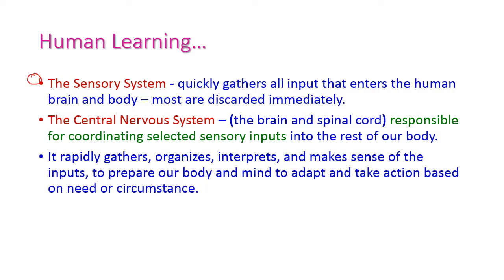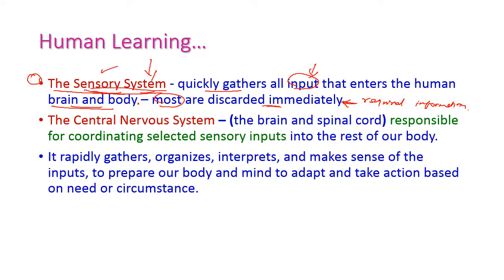The sensory system acts as the input devices of our human body, gathering inputs from the environment that enter the brain and body. Most of that information is discarded immediately; only the required information is collected. The central nervous system involves two organs — the brain and the spinal cord — which are responsible for coordinating selected sensory input to the rest of the body.